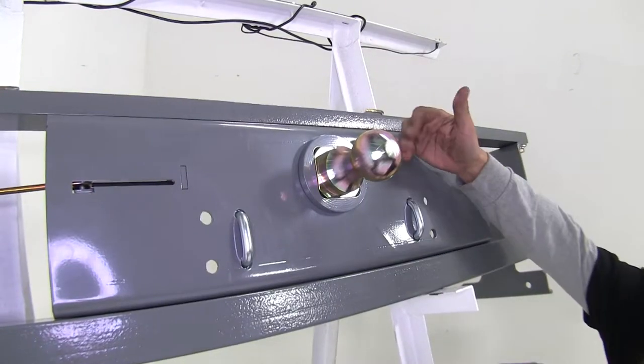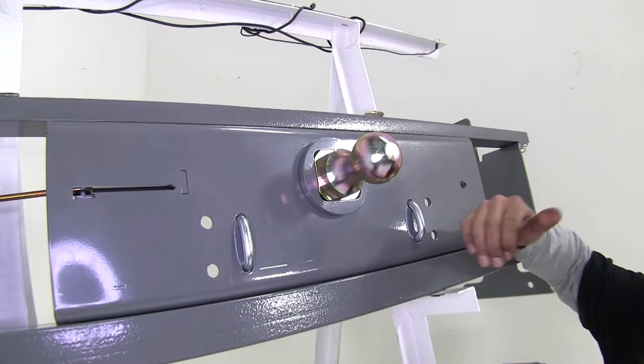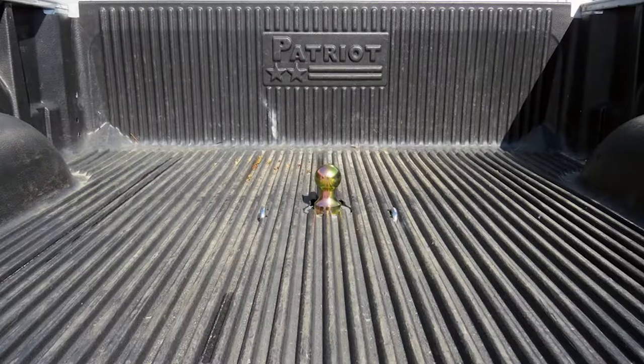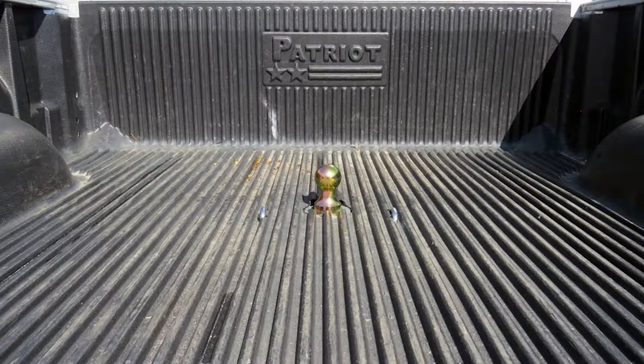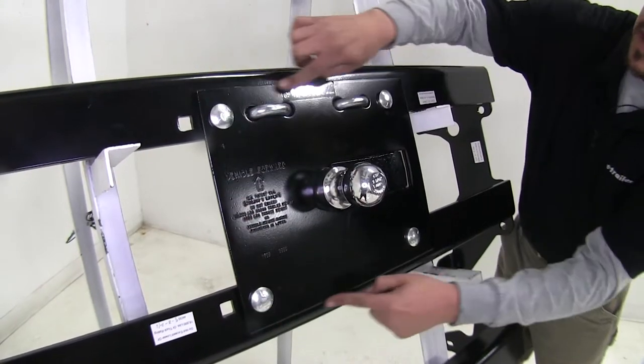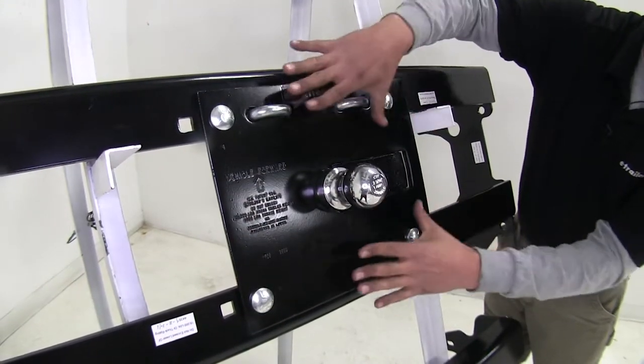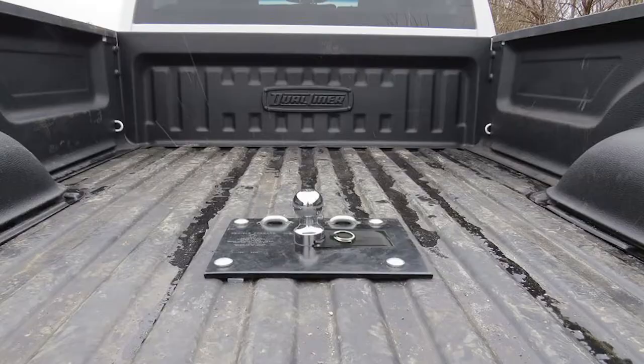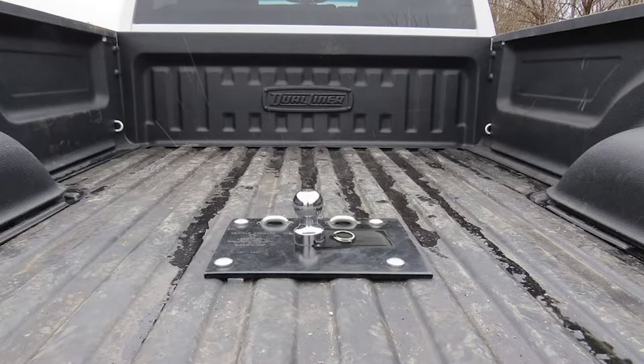Now both under bed kits, all we're going to see in our bed is the ball and our safety chain loop sticking out. Now the Drawtite fold down is going to be a little bit different. We're going to have this plate sticking out and it's going to be sitting in our bed. The only thing really protruding out is going to be the ball but we are going to have this plate exposed.